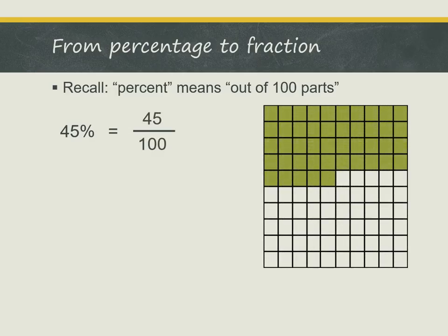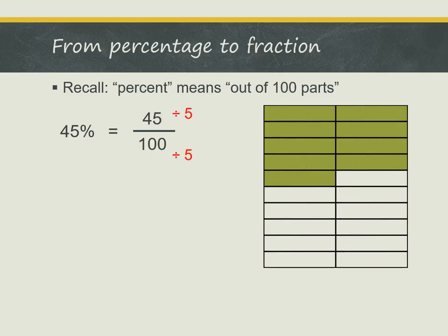And then we can simplify this fraction by dividing the numerator and denominator by 5 to get 9 out of 20. This fraction is in the simplest form, so the answer is 9 out of 20.